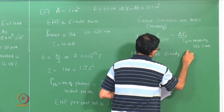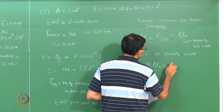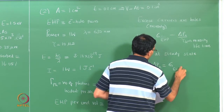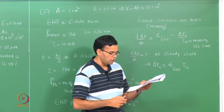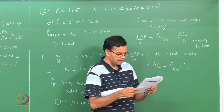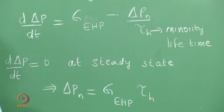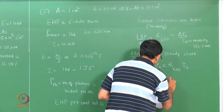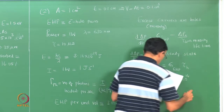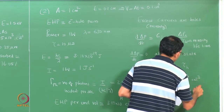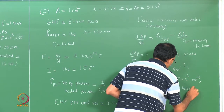At steady state, the excess carrier concentration Δp = G_ph × τ. Substituting the values — lifetime τ = 10 microseconds and generation rate per unit volume as just calculated — this gives 3.17×10¹⁴ per cm³. These are the excess holes at steady state.